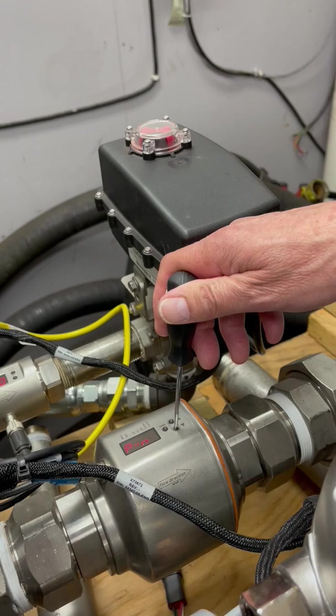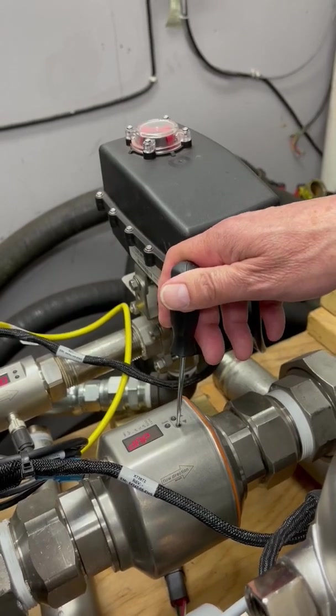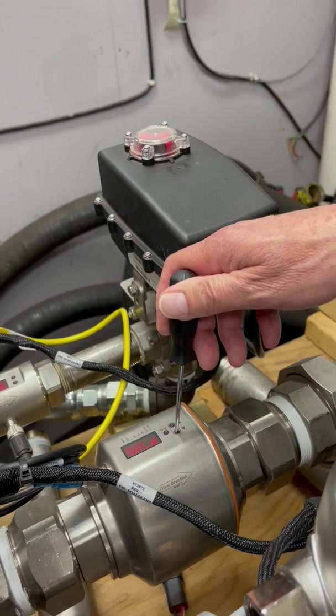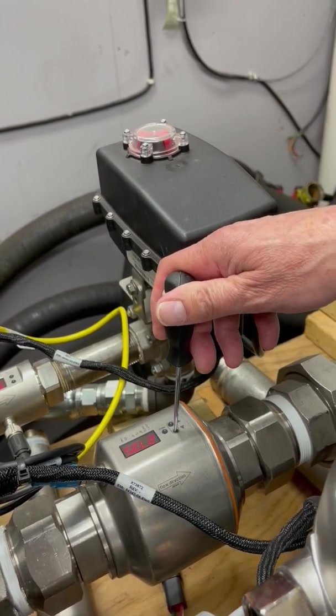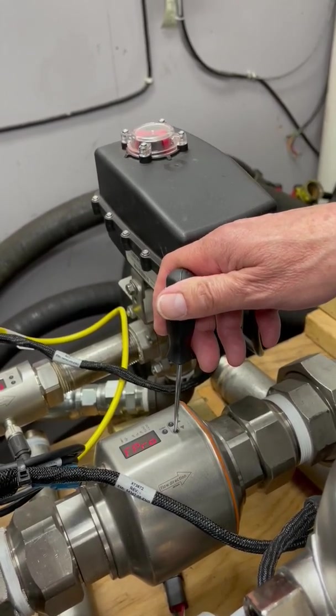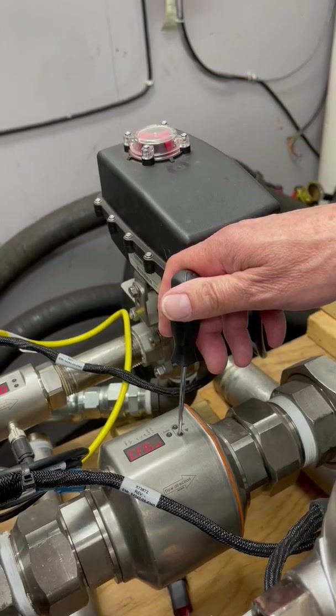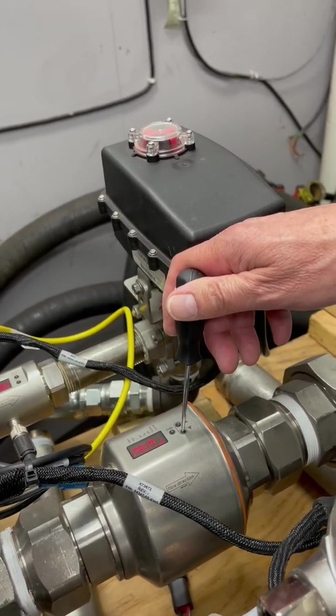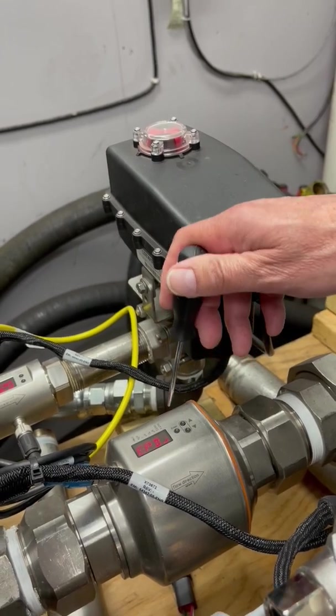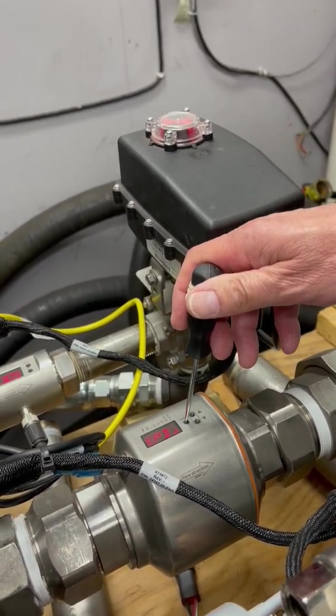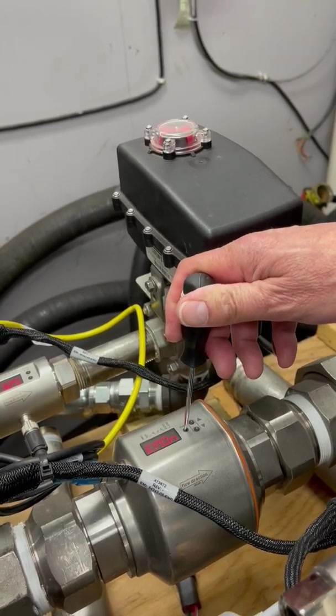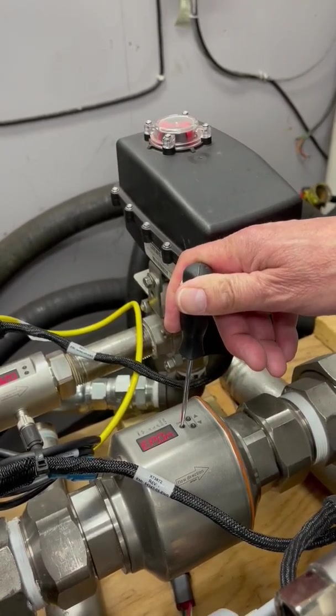The last one is empty pipe detection. I'm just pressing the down arrow repeatedly to find it. Now we're back in the extended function menu, and there's EPD for empty pipe detection. Verify that it's on, which it is.